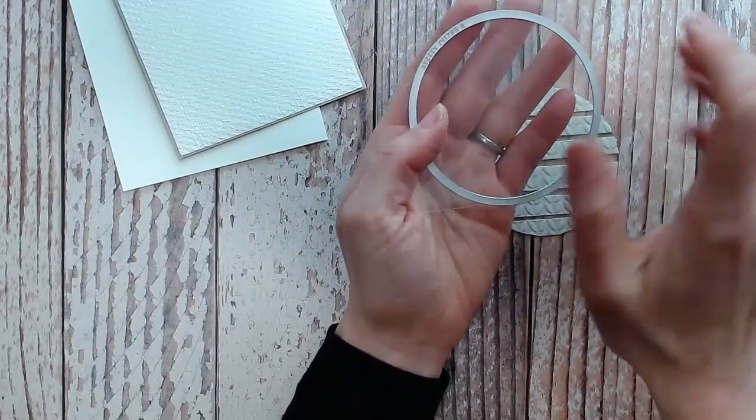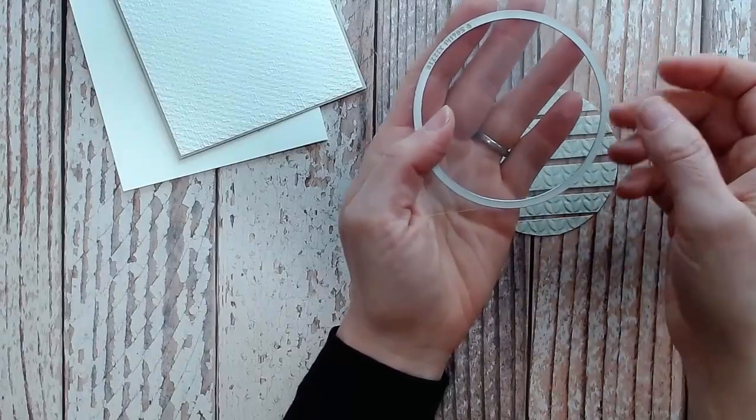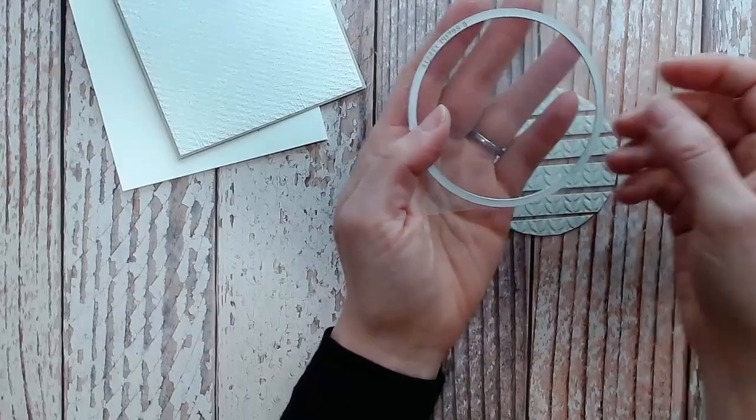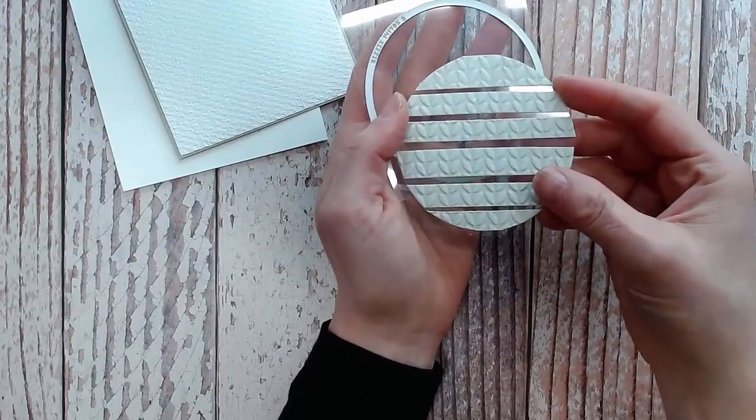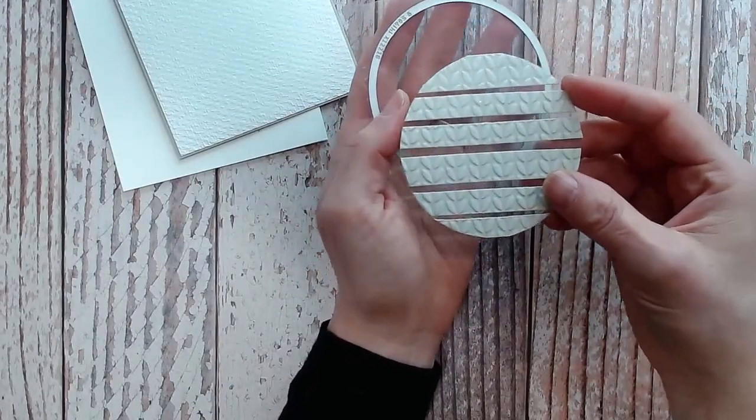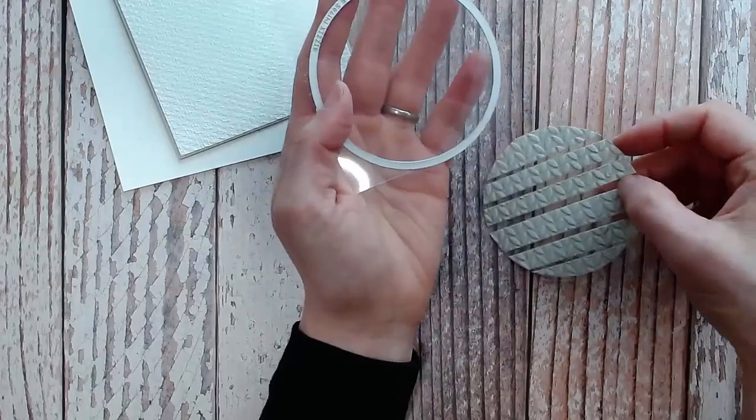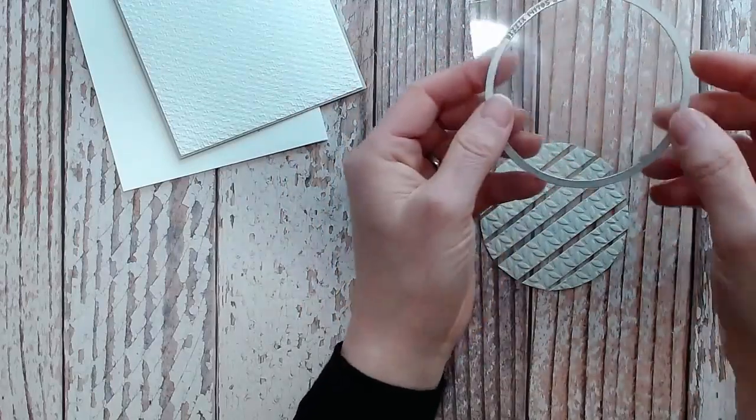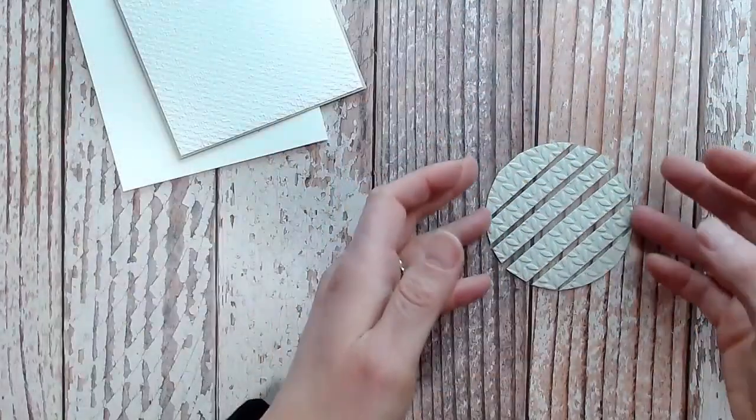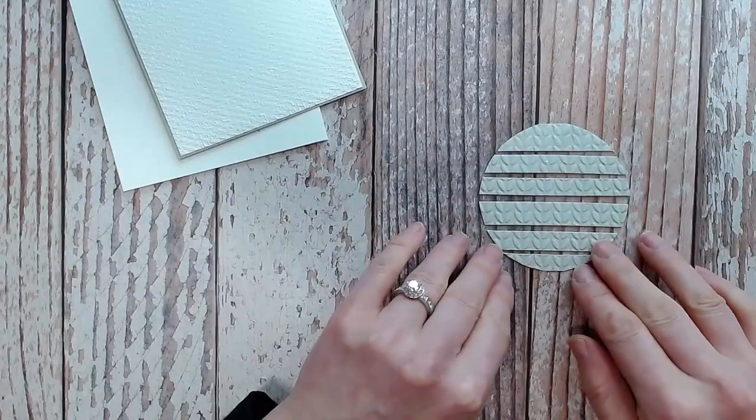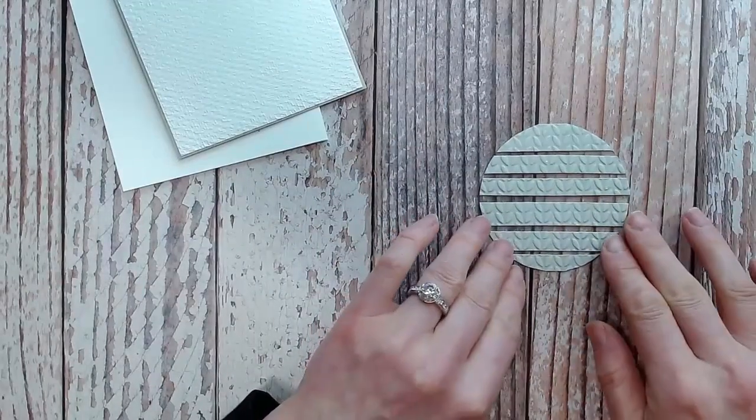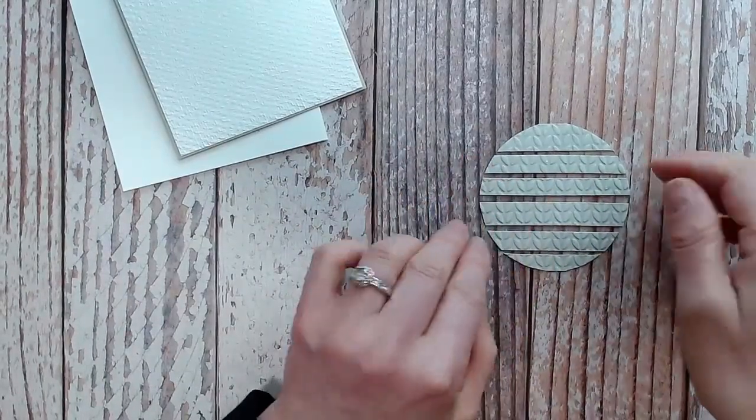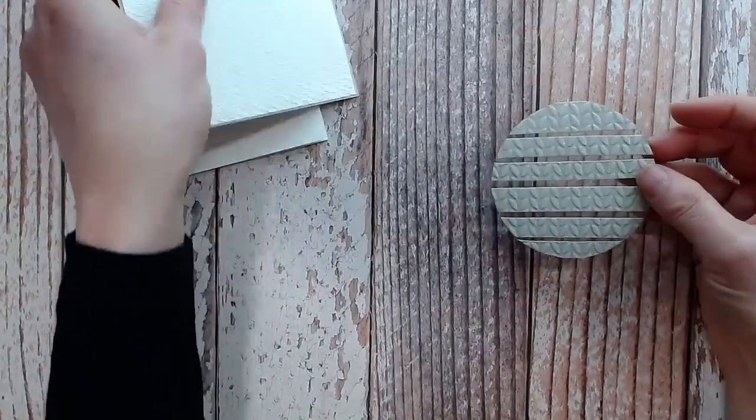The reason why I didn't do that with this is because I have embossed it and if I ran it through the die cutter again, all my embossing would be flattened. But with all the other samples that I'm going to show you later, that's the way I did it. I just did it on a square or rectangle and then die cut it afterwards. So either method works.